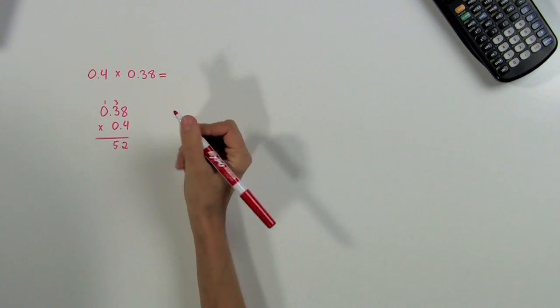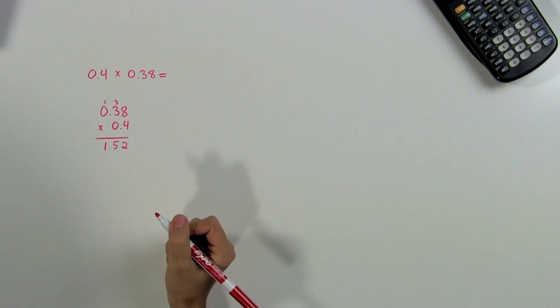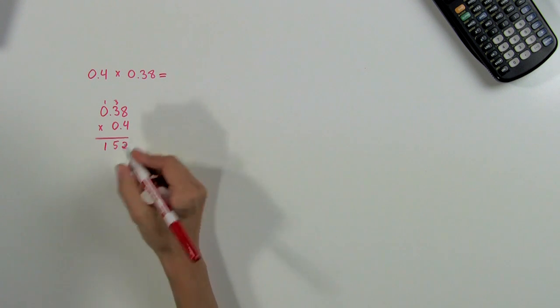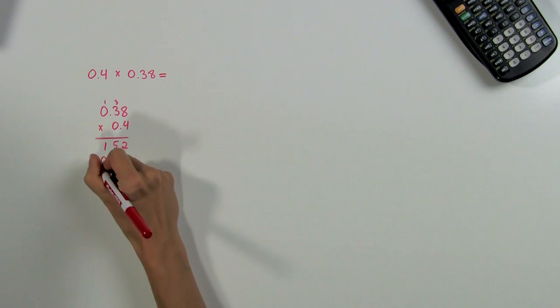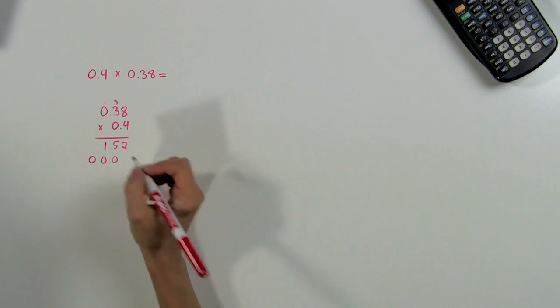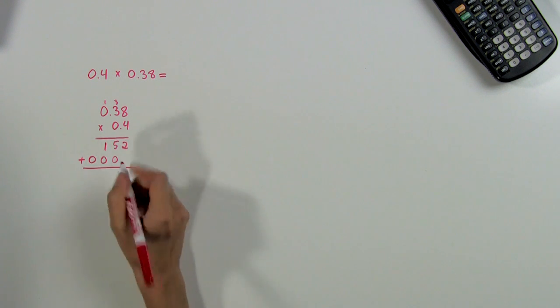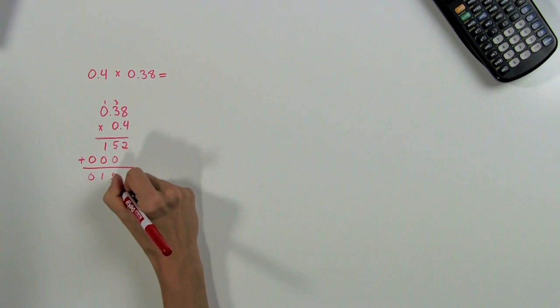And 4 times 0 is 0, plus 1 is 1. Now we multiply the 0 times the top line again, and of course that's all zeros. Now we add the two lines and get 0152.